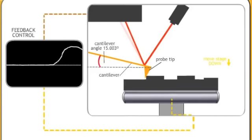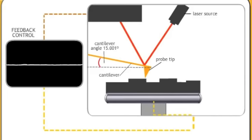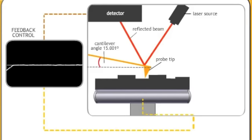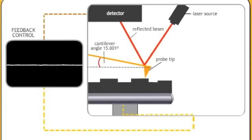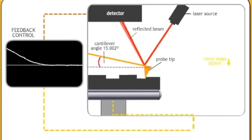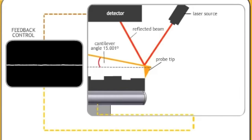A laser reflecting off the back of the tip moves up and down on the detector as the spring moves. The feedback loop reacts to change in the laser position by adjusting the height of the sample in order to keep the force constant.